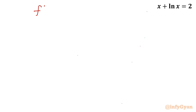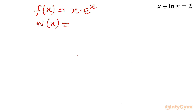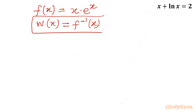Our function is in product-log form. We know that it is x times e raised to the power x. So if f(x) equals x times e raised to the power x, then we can write Lambert W of x as equal to f inverse of x. This is the relation I am going to use.